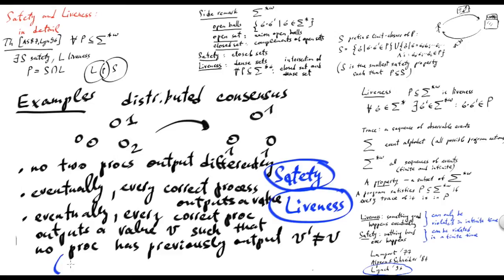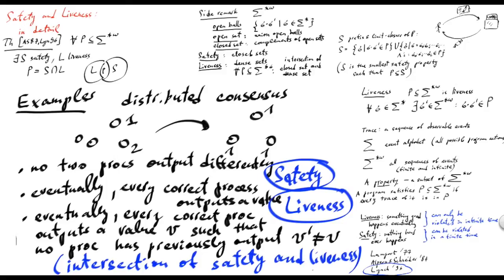That would be an intersection of safety and liveness. The corresponding liveness property would be the one which says that eventually every correct process outputs a value, and the corresponding safety property would be the one which says that no two processes decide differently. The mixture of the two gives us the mixed property we just defined.